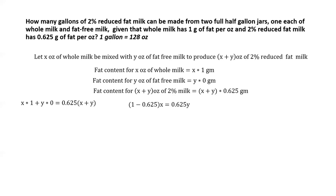From this equation, we move X to one side and get (1 minus 0.625)X equals 0.625Y, which simplifies to 0.375X equals 0.625Y. Dividing both sides, the ratio X to Y equals 0.625 to 0.375. Since both have the same number of decimal digits, this is 625 to 375. Dividing both by 125 gives us X to Y equals 5 to 3.